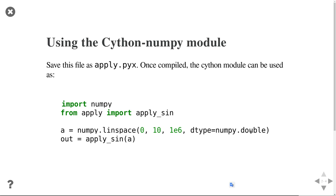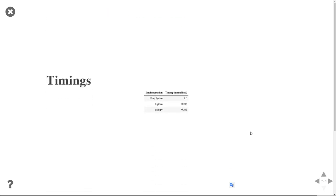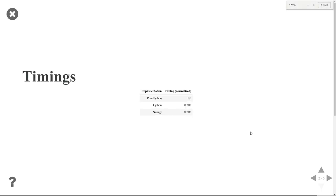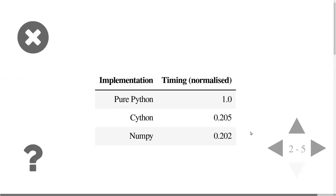You save this as a .pyx Cython file, and once compiled you can use it just like any other Python module: 'from apply import apply_sinus', then call it on a standard numpy array. You need to make sure the type matches — this apply_sinus is compiled specifically for numpy arrays of type double, so calling it with a different array type will fail. As for speedups: pure Python takes 1 second, the Cython implementation takes 0.2 seconds, and the vectorized numpy version also takes 0.2 seconds. For programs you can't vectorize, Cython will definitely win.